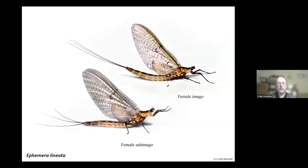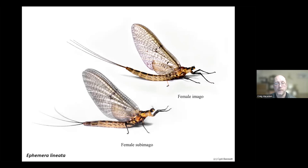Looking at different species' imago and subimago stages: Ephemera lineata, one of the largest UK mayflies — in the subimago the wings are quite opaque because the imago's wings are inside covered by an outer wing covering. The tails and legs are relatively short. In the imago, the tails are much longer, legs slightly longer, and wings are transparent. The body is coloured in the female because it contains all the eggs.